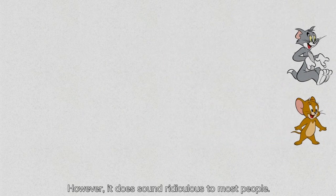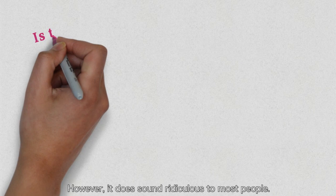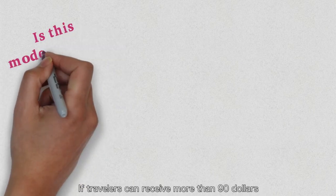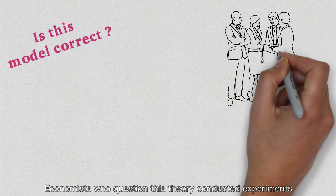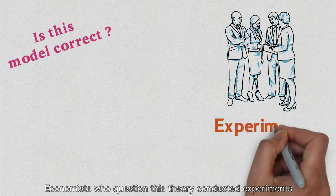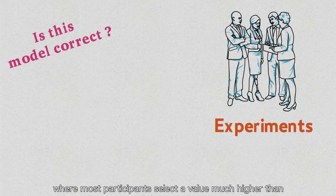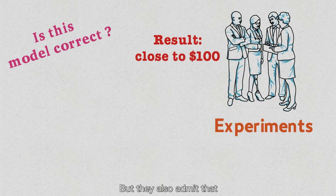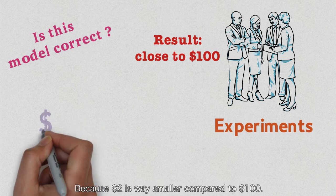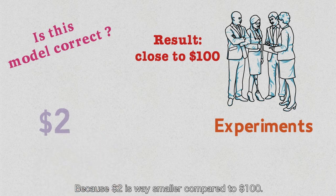However, it does sound ridiculous to most people. If travelers can receive more than 90 dollars, why do they quote just two dollars? Economists who questioned this theory conducted the experiment, where most participants selected values much higher than the Nash equilibrium and closer to a hundred dollars. But they also admit that they did not think about this problem seriously when doing the experiment, because two dollars is way smaller compared to a hundred.